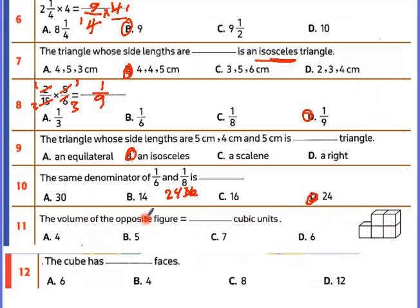The volume of the object figure — count: one, two, three, four, five — so there are 5 cubic units. The cube has six faces.